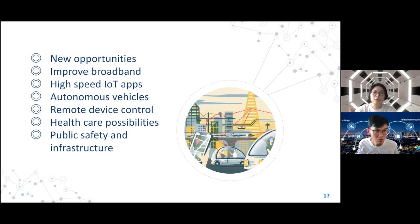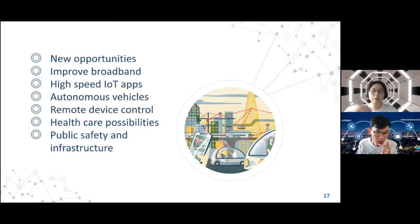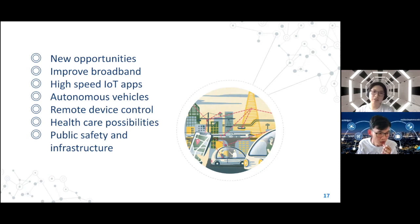5G networks will also allow cities to operate more efficiently. Utility companies will be able to track usage remotely — for example, sensors in the city can quickly notify relevant departments when a street light goes down. 5G can also greatly improve navigational systems: accuracy of position with 4G is 10 to 500 meters, but with 5G that comes down to just 1 meter. Integrated with video analytics and AI, this could help adjust traffic signals and flows in real time.